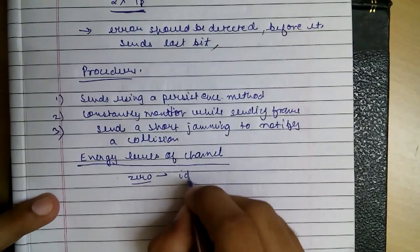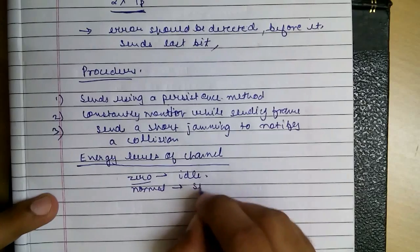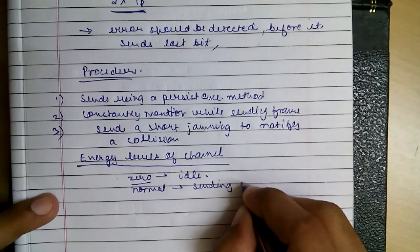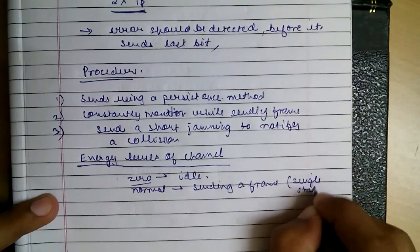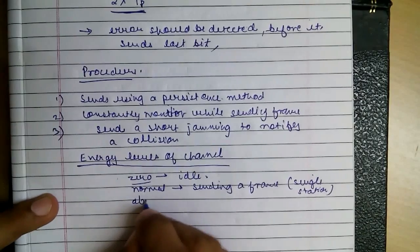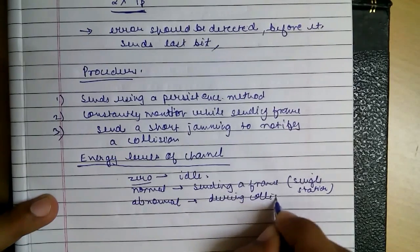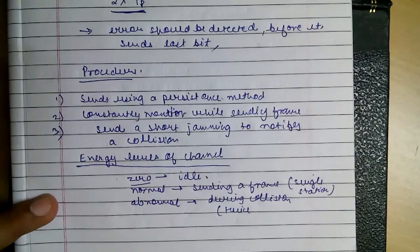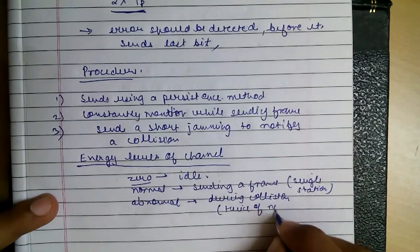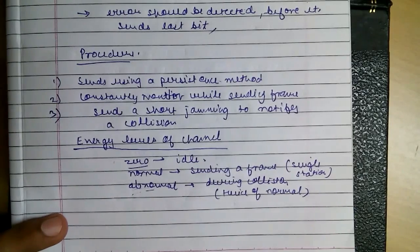0 means simply the channel is idle. Normal means when a single station has found it idle and is sending the frame — that is when a single station is sending. And the last one is abnormal, that is during collision — it will be twice the normal level as two signals will be colliding. So if abnormal energy is detected, the station will know that a collision has occurred.